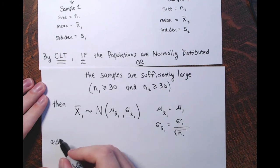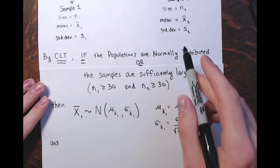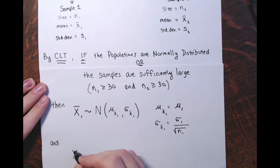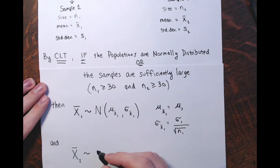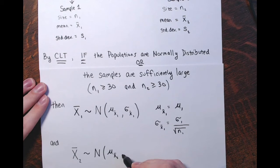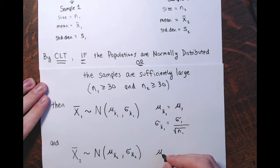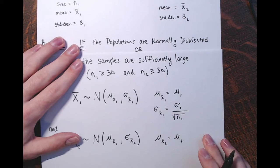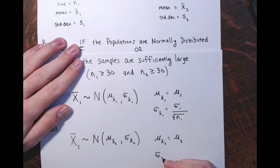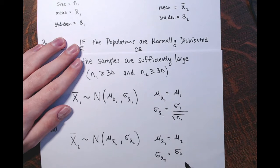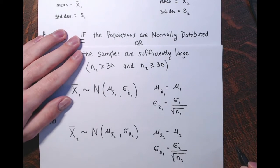The same thing goes for x-bar 2. The distribution of the x-bar 2's would be approximately normal with a mean of mu sub x-bar 2 equal to mu 2, and a standard deviation of sigma sub x-bar 2 equal to sigma 2 divided by the square root of n2.